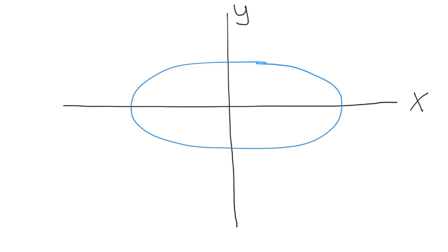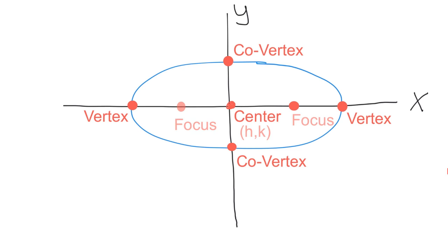There is our horizontal ellipse in blue. We have a center of an ellipse. Then along the major axis of the ellipse, we have the vertexes at each end of the major axis. At the end of the minor axis, we have the co-vertexes. There are two focus points along the major axis.